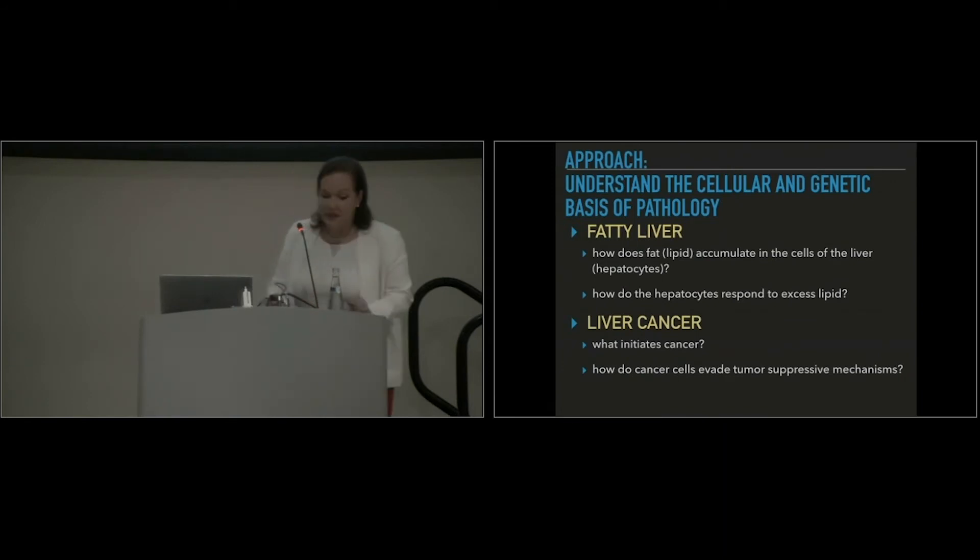I'm a basic scientist, and my approach to this is to understand how these diseases form. Some of the questions that my lab is focused on is to really understand the cellular and genetic basis of these pathologies. So we ask questions like, in fatty liver, how does the fat get there? Once it's there, what happens in the liver? How do the hepatocytes and the whole organism respond to this abnormal liver accumulation? And in liver cancer, a very simple and broad question in the field of cancer is, how does cancer form? And we know that there are many mechanisms in our cells to stop cancer cells from spreading or dividing, but these obviously fail because there's many cases of cancer. So how do cancer cells evade these mechanisms to suppress the tumors?